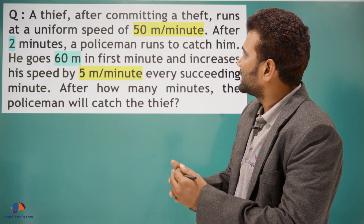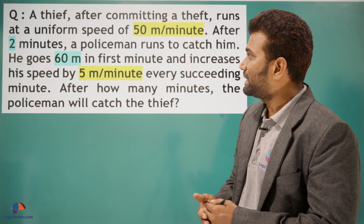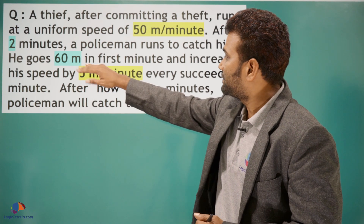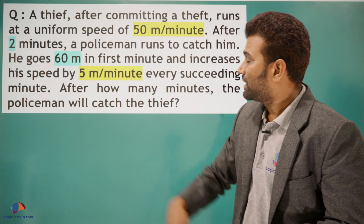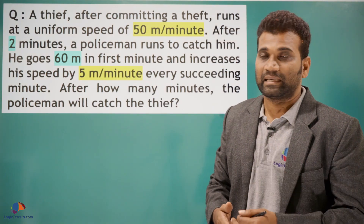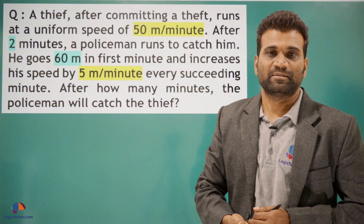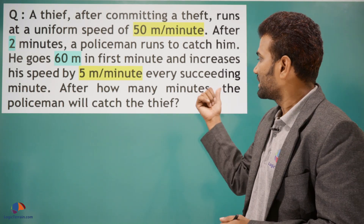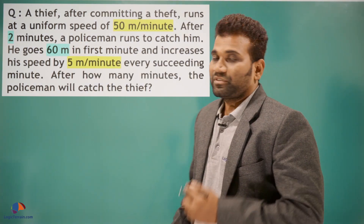So in this question, the thief is running and after two minutes a policeman starts running. The policeman starts at 60 meters per minute and increases his speed by 5 meters per minute every succeeding minute. The thief is moving at a uniform speed of 50 meters per minute. We need to find after how many minutes the policeman will catch the thief.